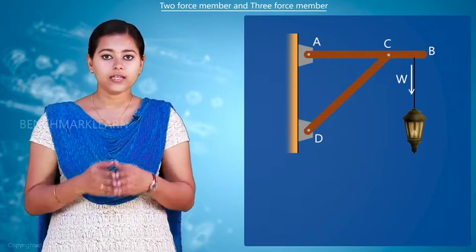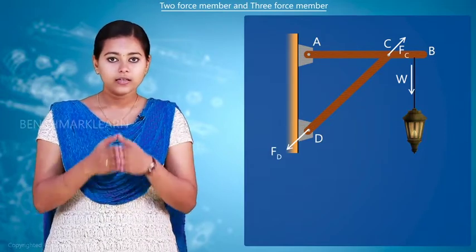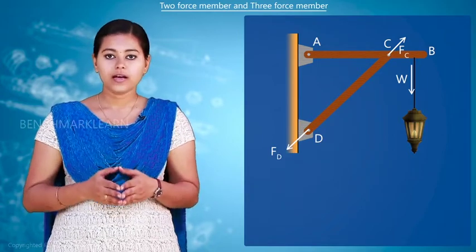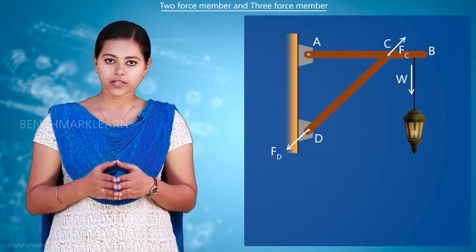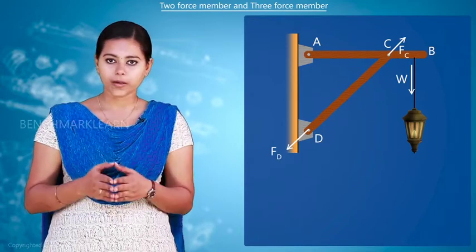In the case of CD, there are two forces acting as shown. Here we can say that there are two equal forces acting in opposite direction and have the same line of action. So the member CD is called a two force member.